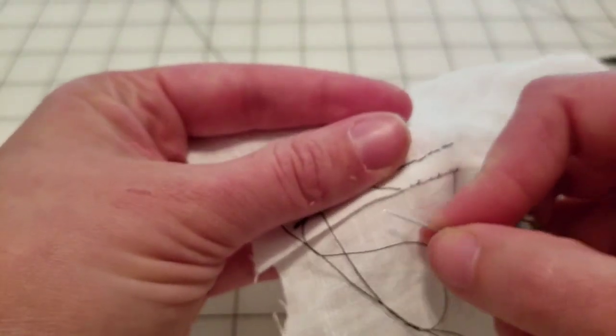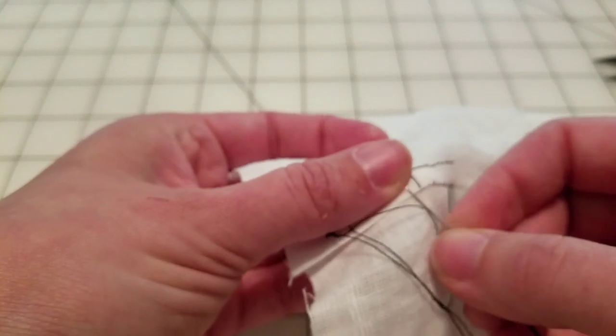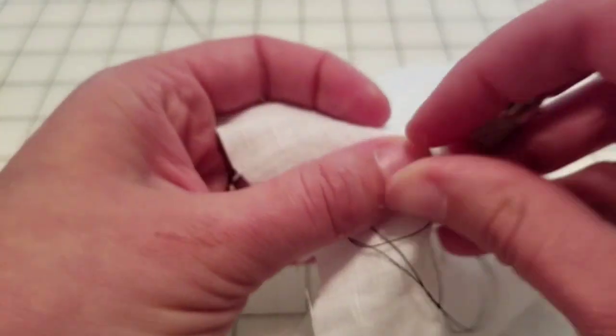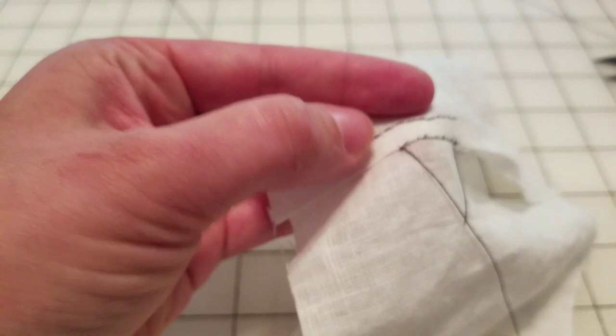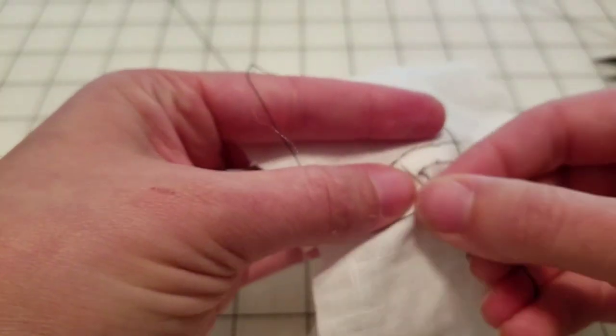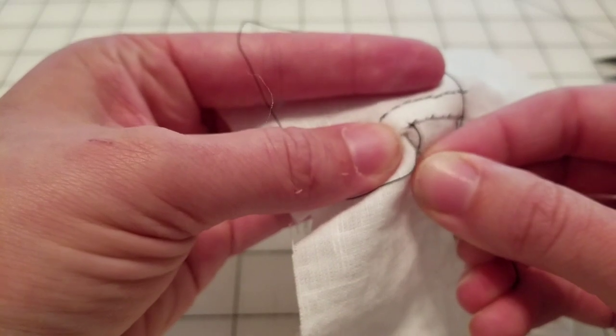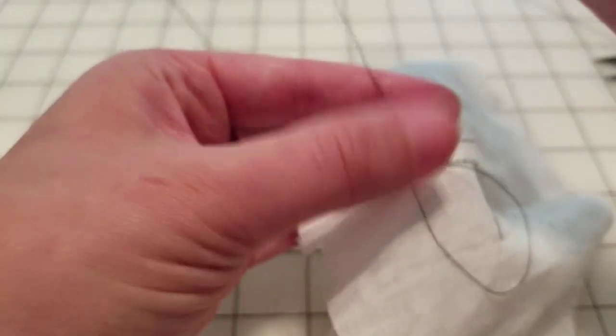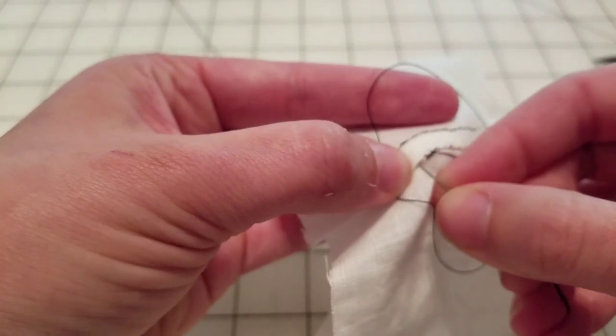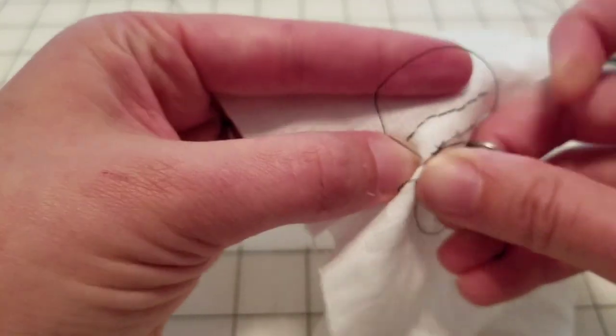All right, it's going to be slightly the reverse. There we go. So I'm looping the thread around and going straight through. Now, it's important to note that this seam here that I'm working on is a 1/4 inch felled seam.